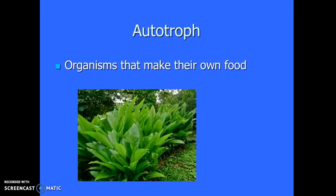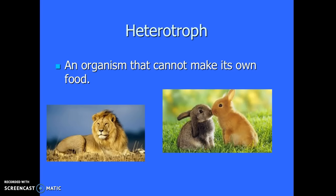A heterotroph is an organism that can't make its own food. They have to go out and find their food somehow. You looked at single-celled organisms that were heterotrophs, like the paramecium. You watched it surround yeast and eat yeast. Of course, a lion would be considered a heterotroph, but even bunnies and worms — anything that needs to find their food and eat it, that doesn't have chloroplasts in their cells.